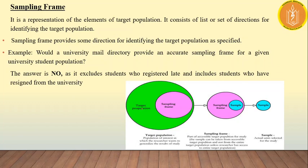What is the sampling frame? It is a representation of elements of the target population. It consists of a list or set of directions for identification of the target population. We derive our sampling frame from the population, but some units are non-responsive so we exclude them, and after that we get our proper sample.